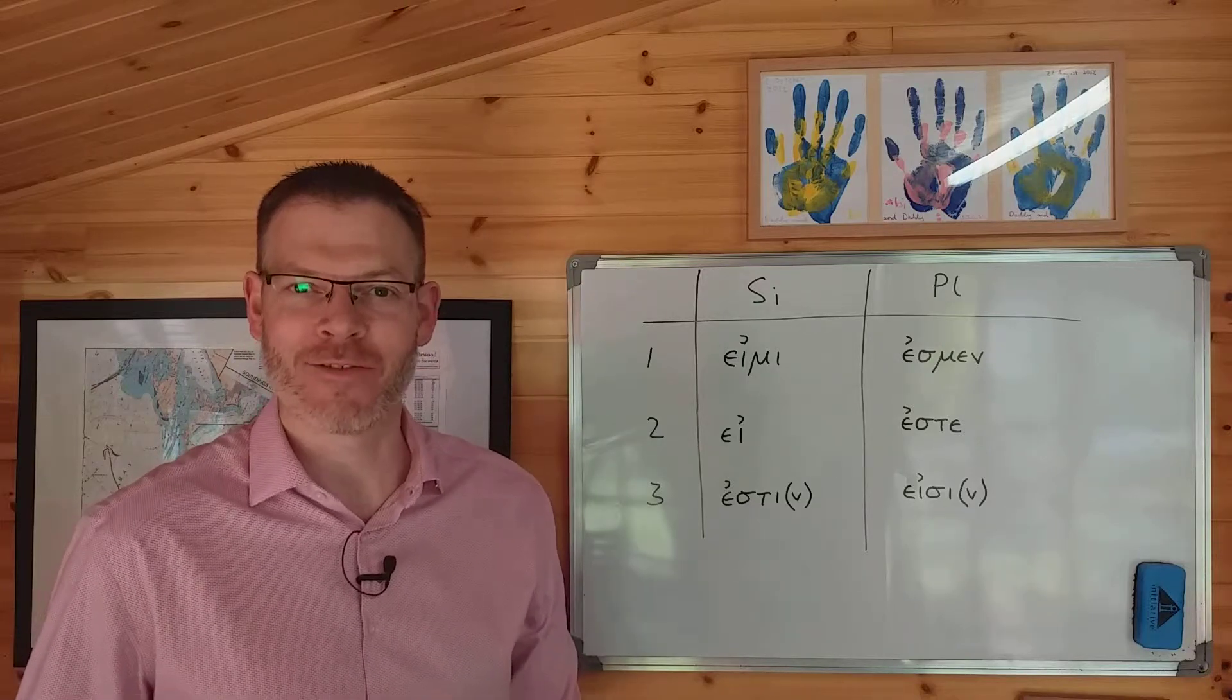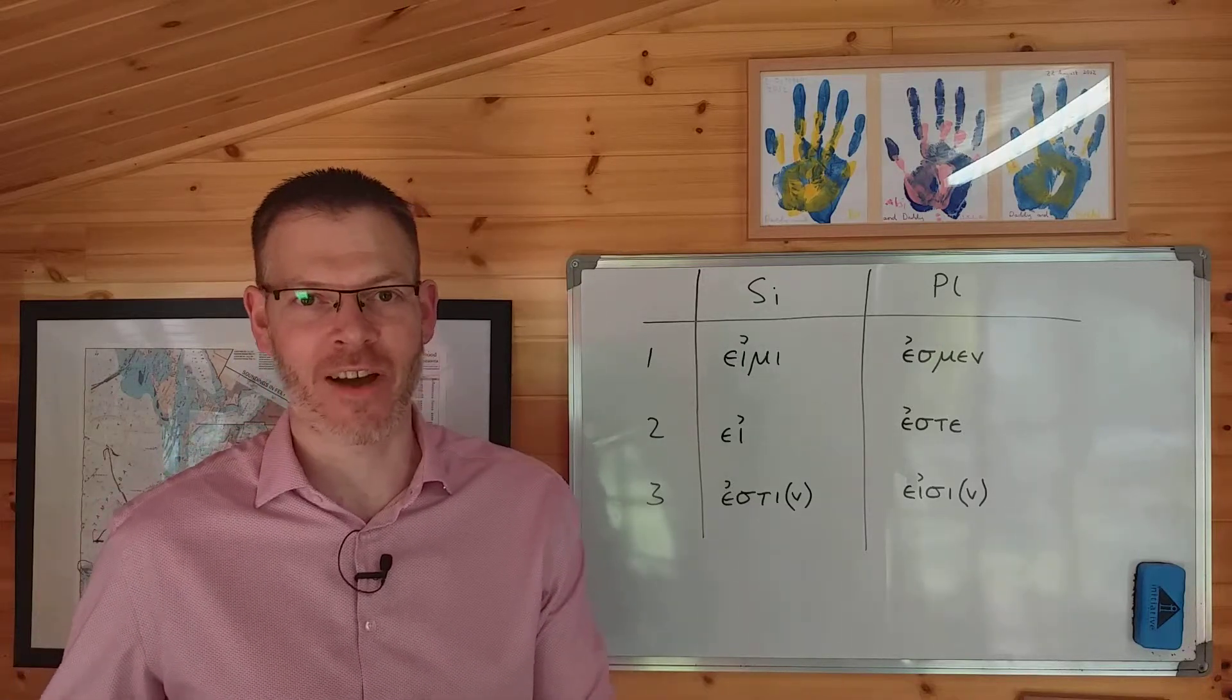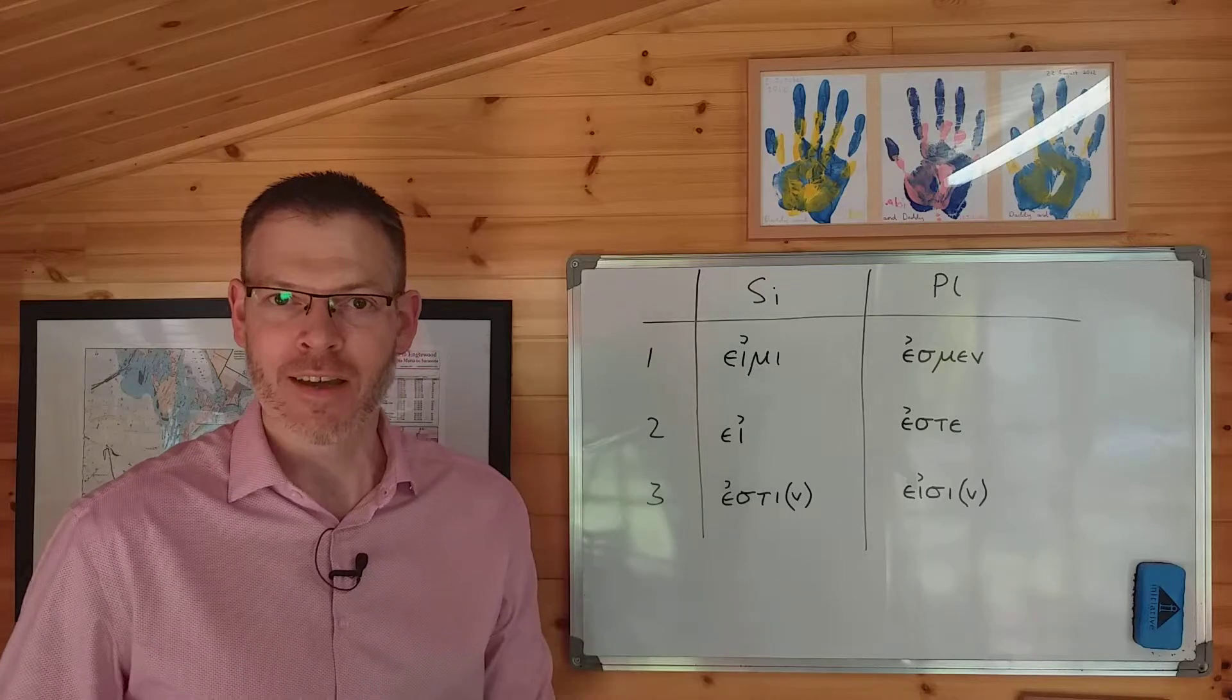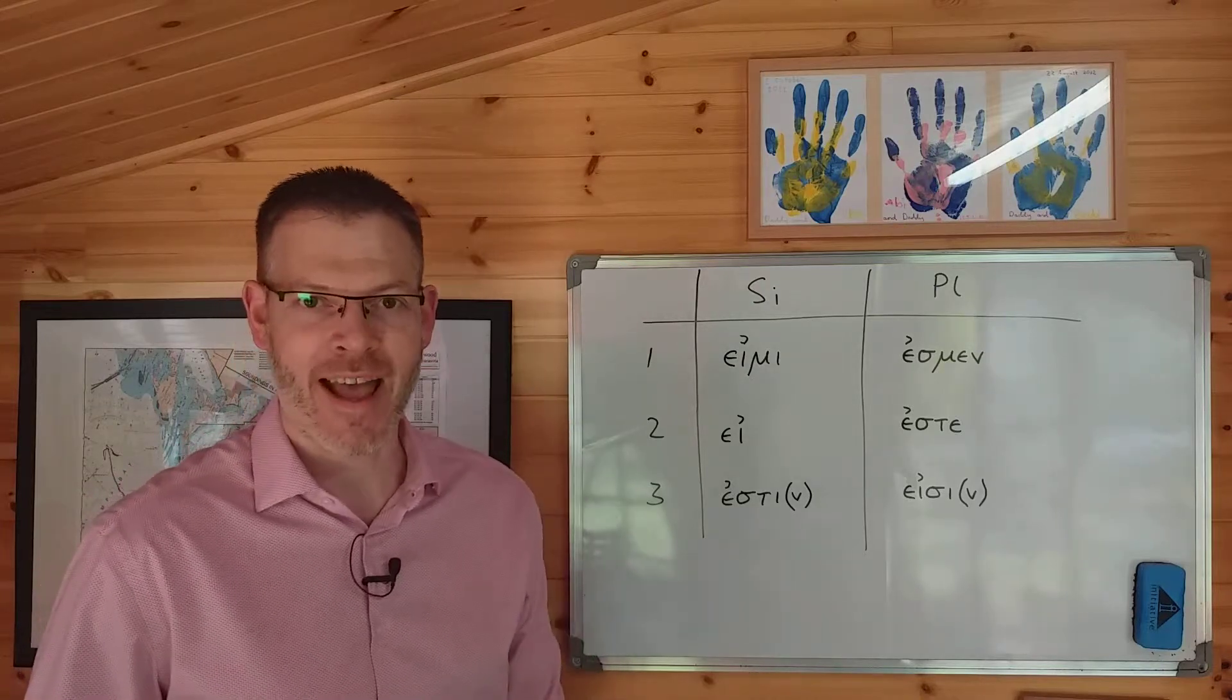Welcome back. We're in Jeremy Duff's Elements of New Testament Greek, looking today at section 5.3 in chapter 5, the verb εἰμί, I am.